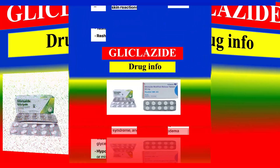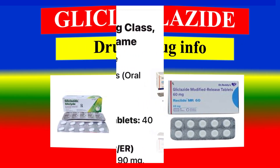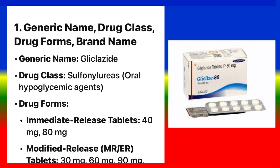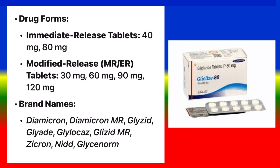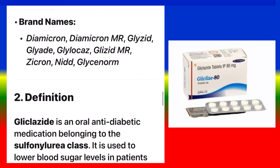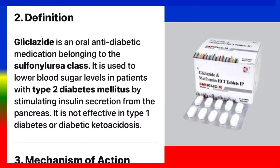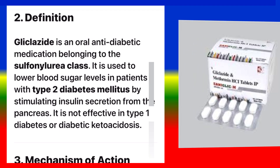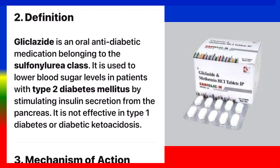Here is a comprehensive, detailed overview of Gliclazide. Gliclazide is an oral antidiabetic medication belonging to the sulfonylurea class. It is used to lower blood sugar levels in patients with type 2 diabetes mellitus by stimulating insulin secretion from the pancreas.